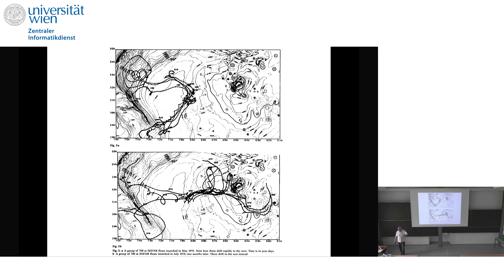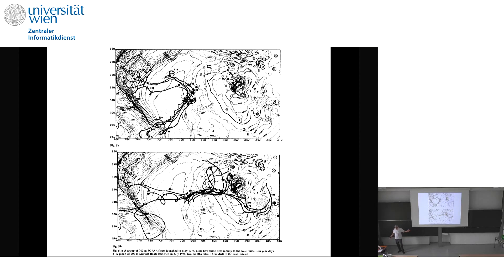These floats were at 700 meters in the thermocline — if these were surface floats it would be much easier to explain as wind direction change, but in the main thermocline it's the fact that the flow there is very different on these time scales. The flow in the ocean is truly non-stationary, and I'm going to show more examples of that.